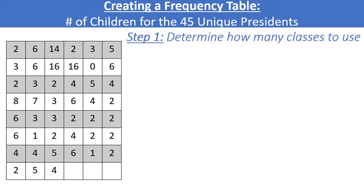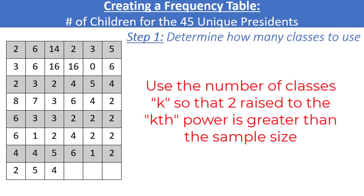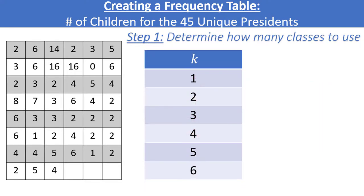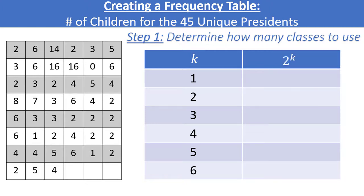One convention that I find easy to use is what is called the 2 to the k rule. This says we should include the number of classes k such that 2 to the k is greater than the sample size. Just list out a table with k values 1, 2, 3, 4, etc. in your first column and 2 to the k in your second column. Then start calculating the powers of 2 until you reach a value larger than your sample size. In our case the sample size is 45, as there are 45 unique presidents. 2 to the first power is just 2, so k equals 1 class is obviously not going to be enough because 2 is not greater than 45.